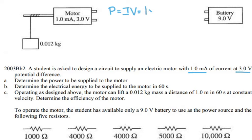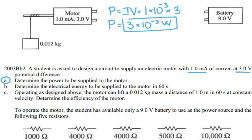So you have 1 milli, milli stands for 10 to the negative 3, times 3 volts. So the power is going to be 3 times 10 to the negative 3 watts. That would be the answer for the first question.